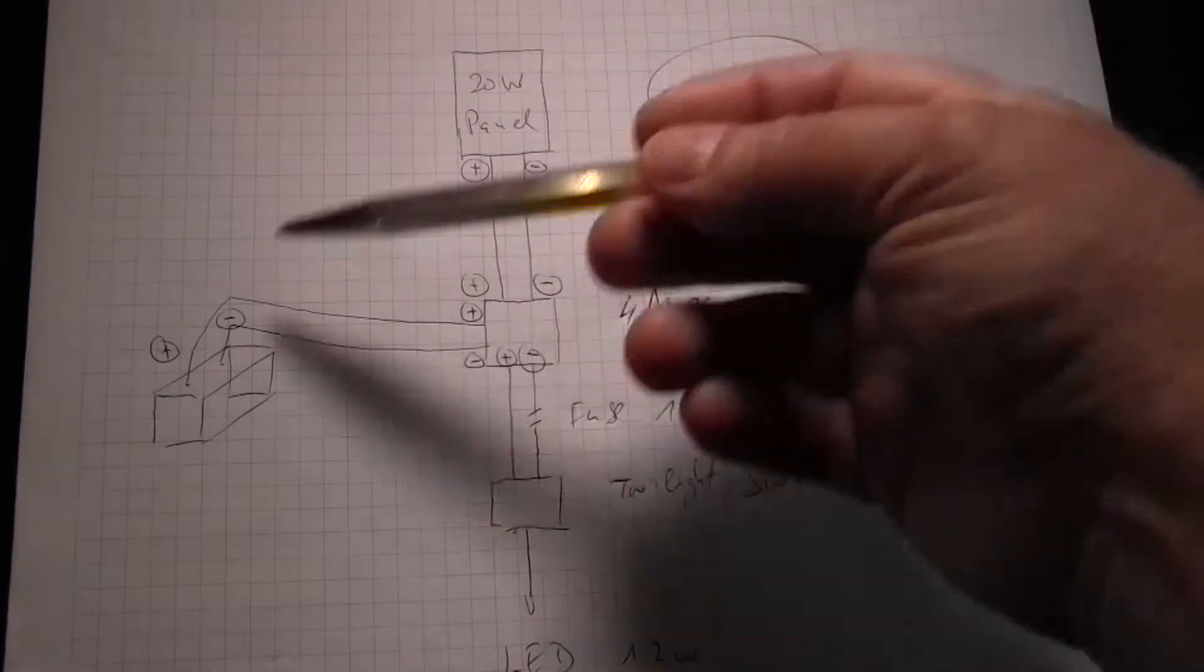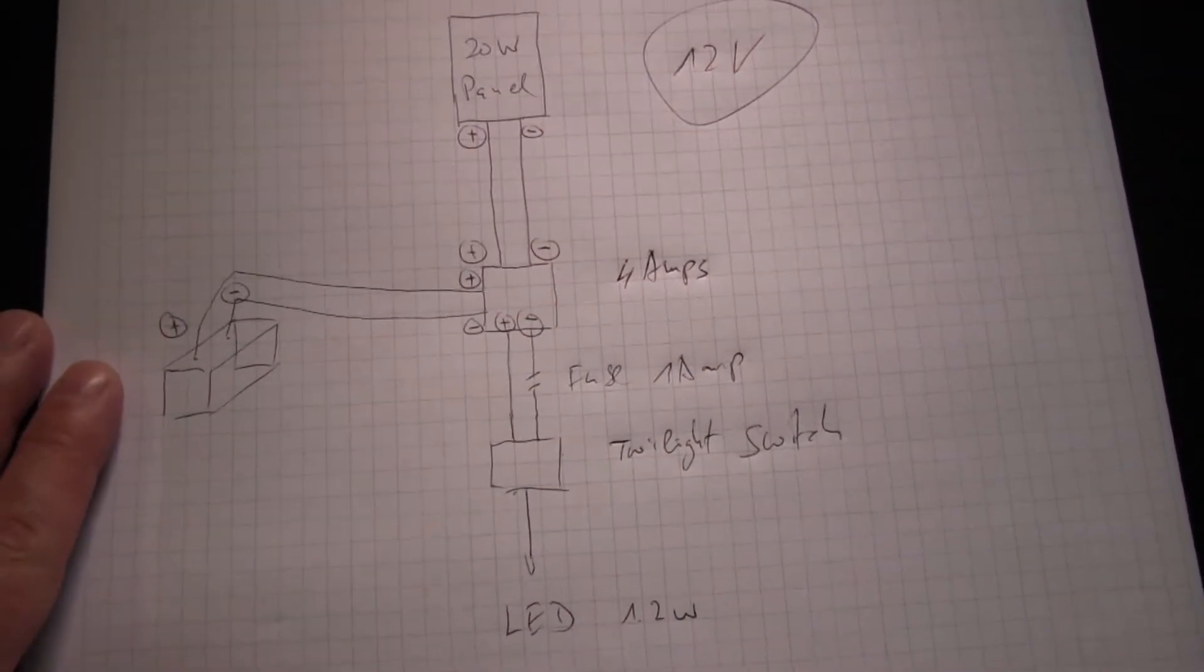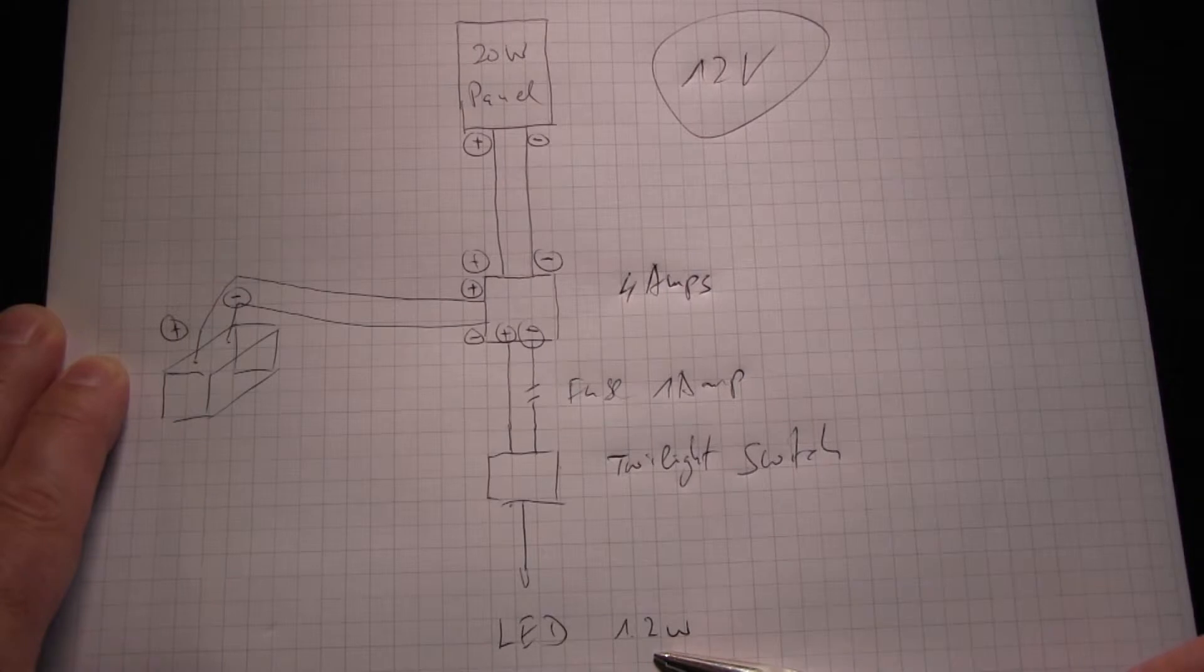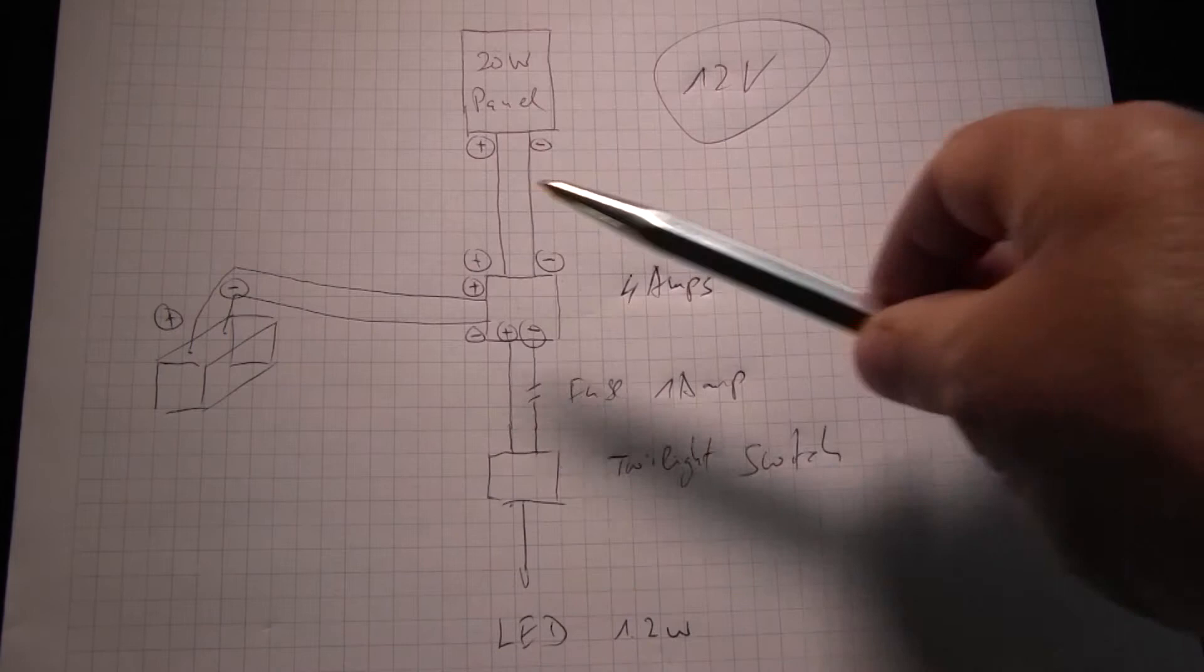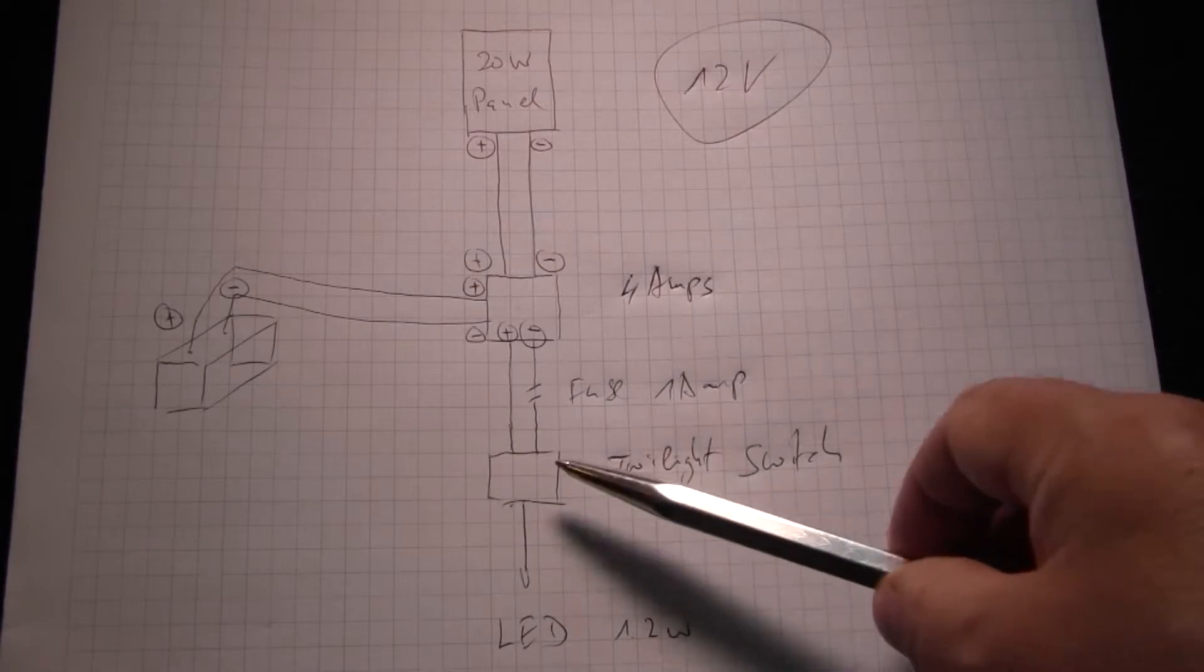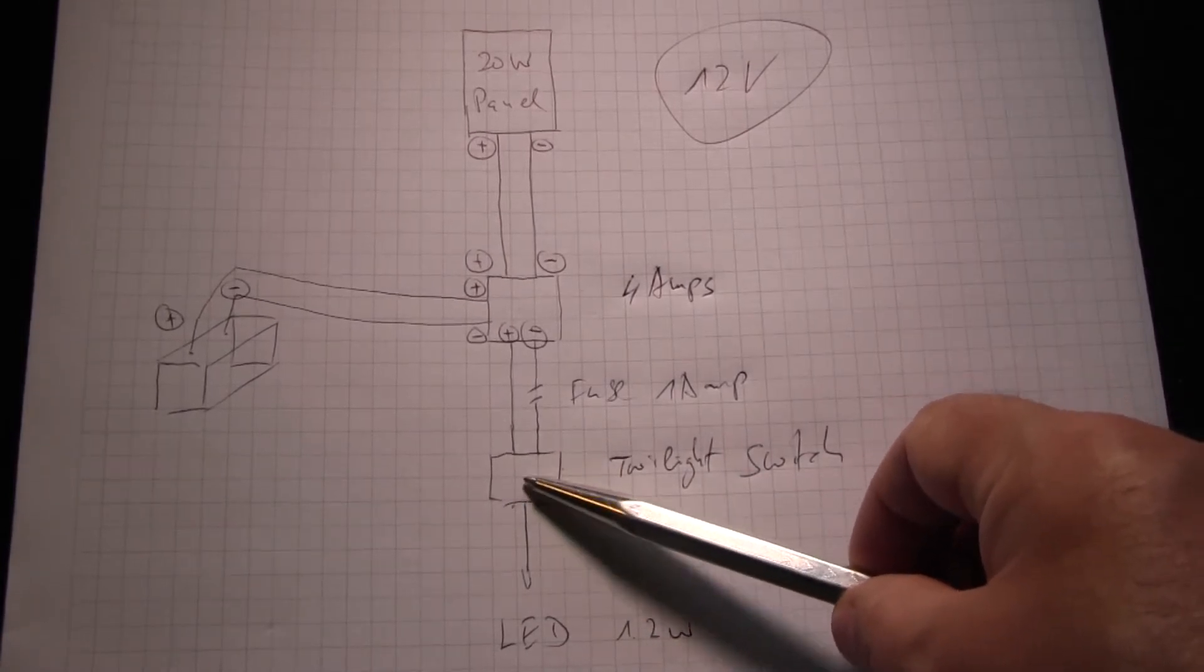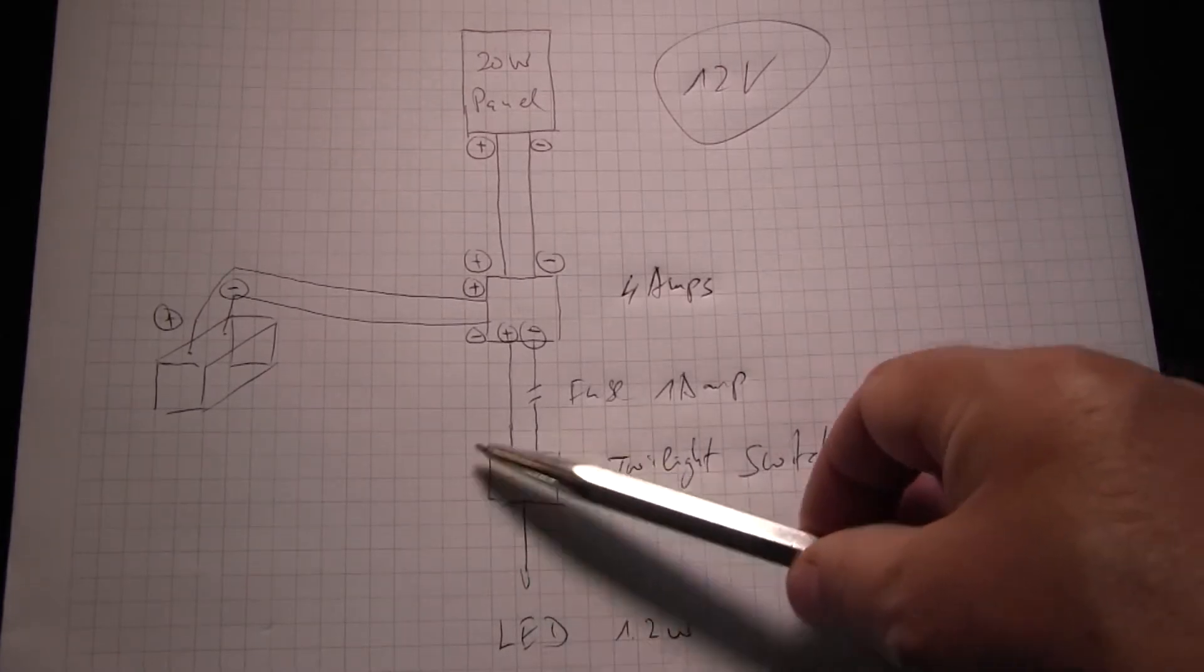And this is all that it takes to have a light that automatically switches on and off at night and in the morning. One can very well vary the use. Now I have installed a twilight switch, one could imagine to have a motion sensor which is installed in this position instead of the twilight switch.